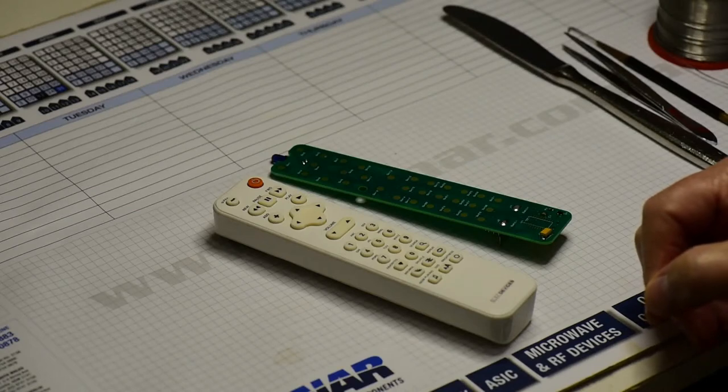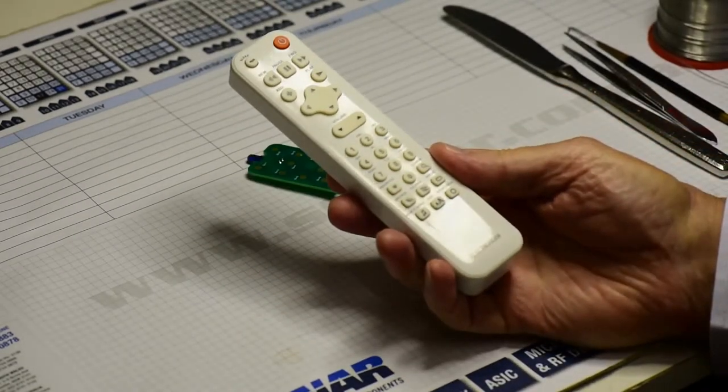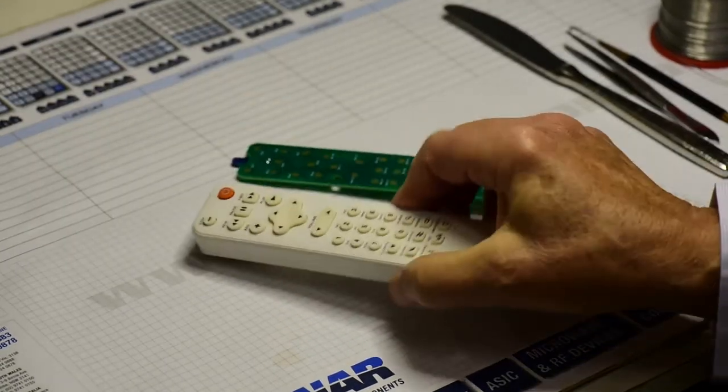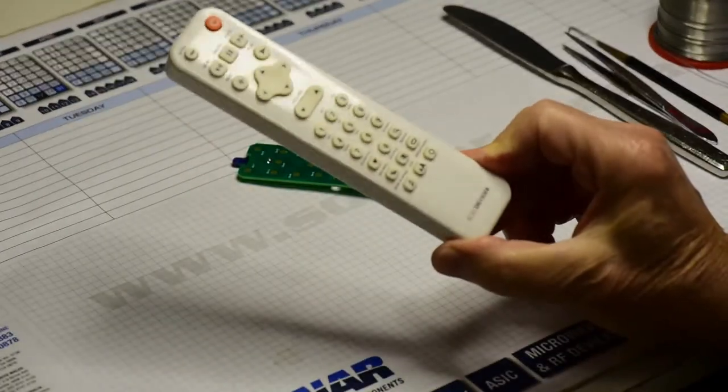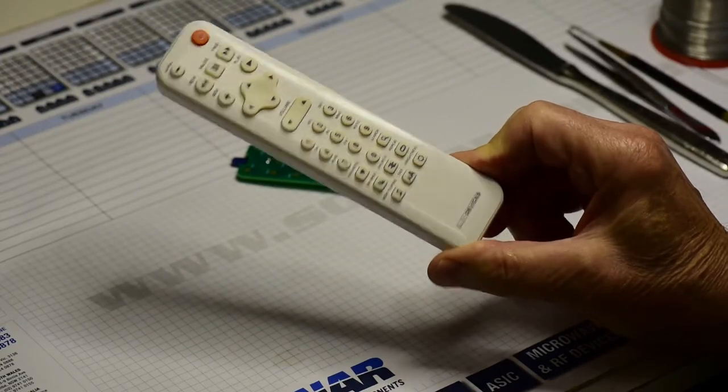I'm going to show you how to replace the circuit board in a faulty remote control for a Squeezebox version 3 or classic. The original remote, this is a Slim Devices one, but the Logitech ones are identical apart from perhaps the color.